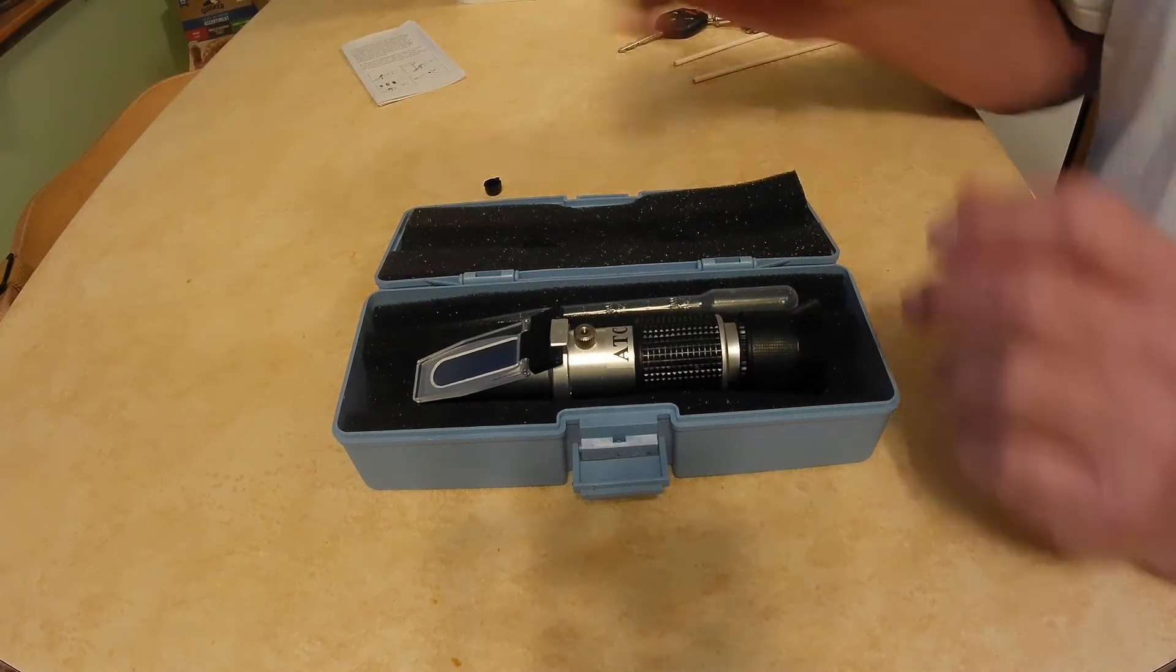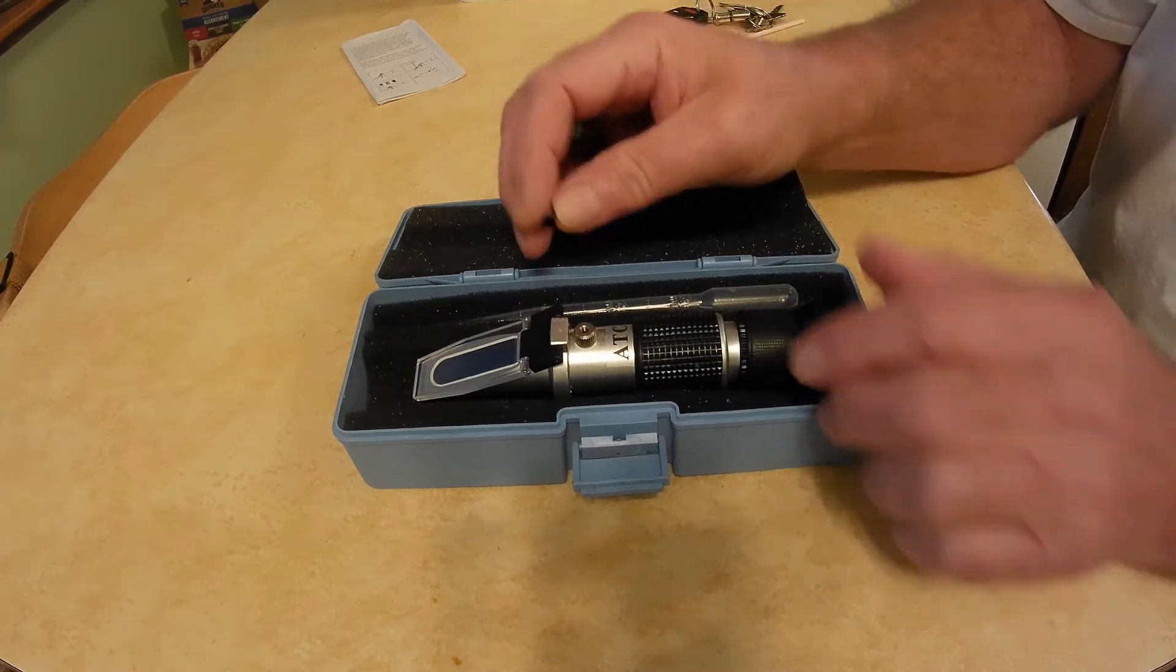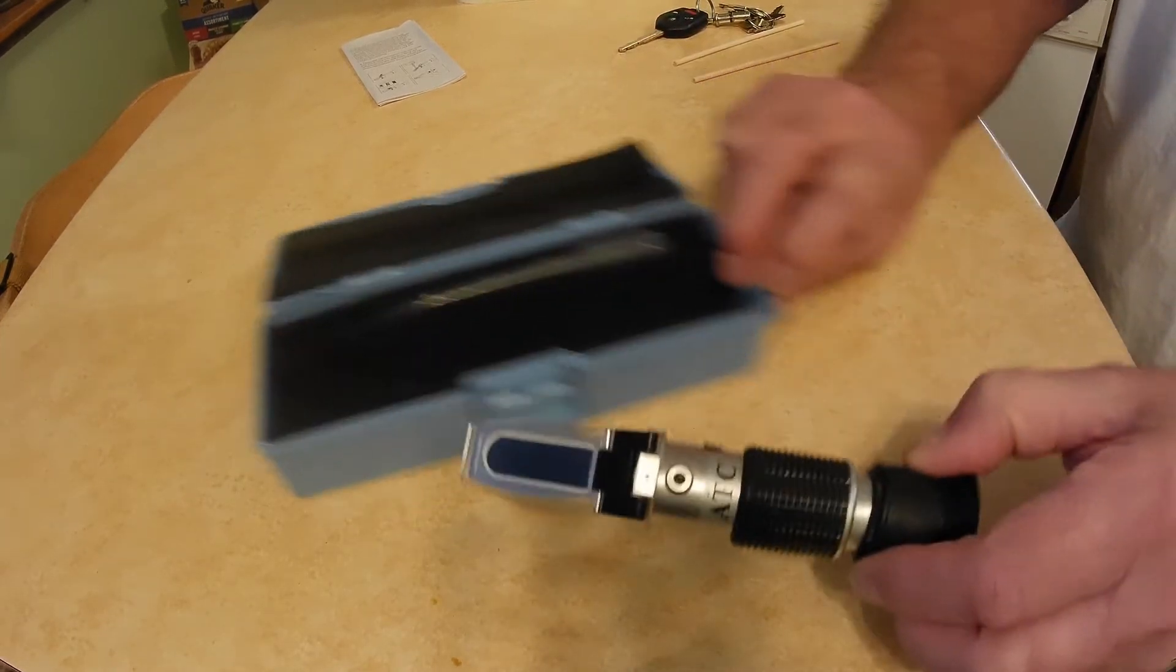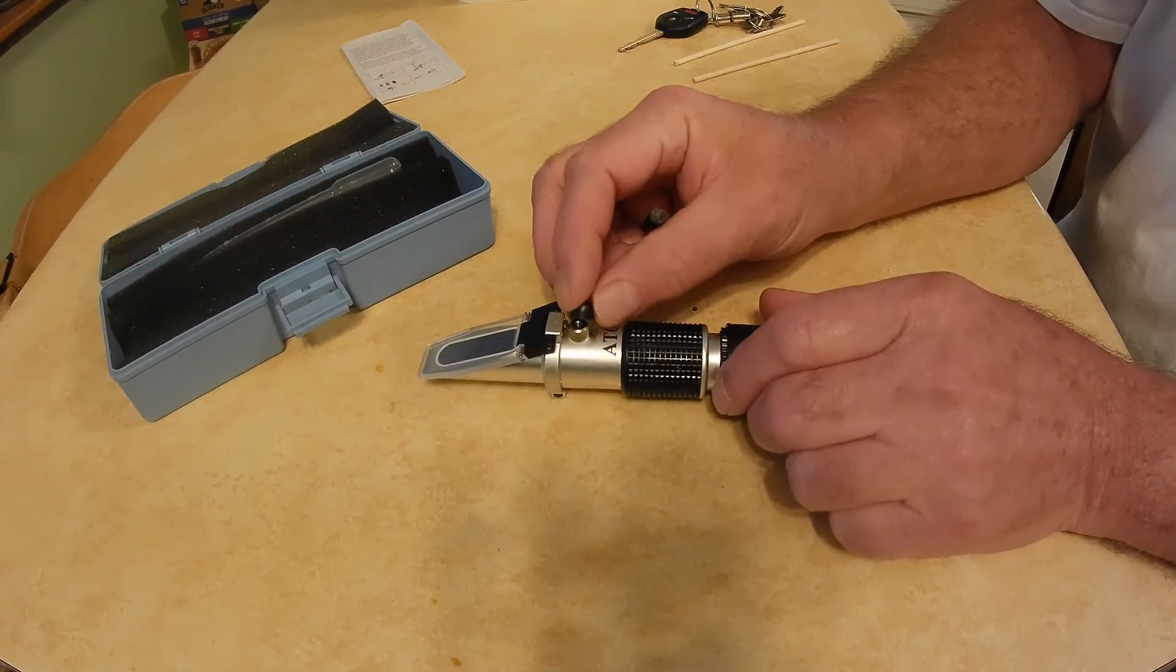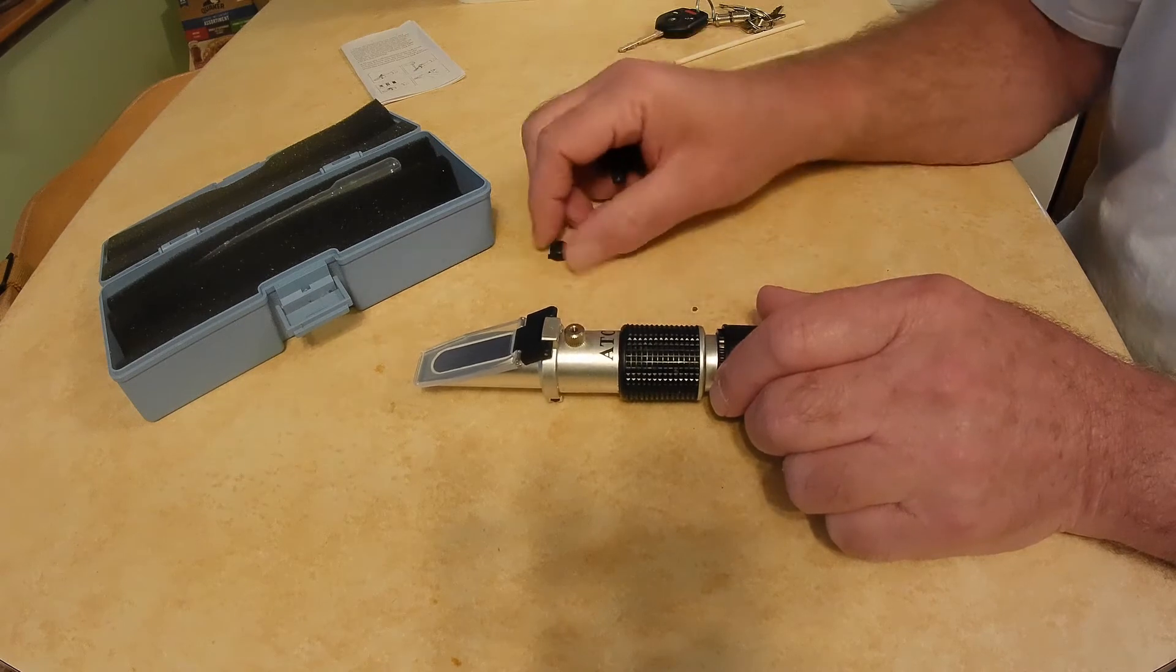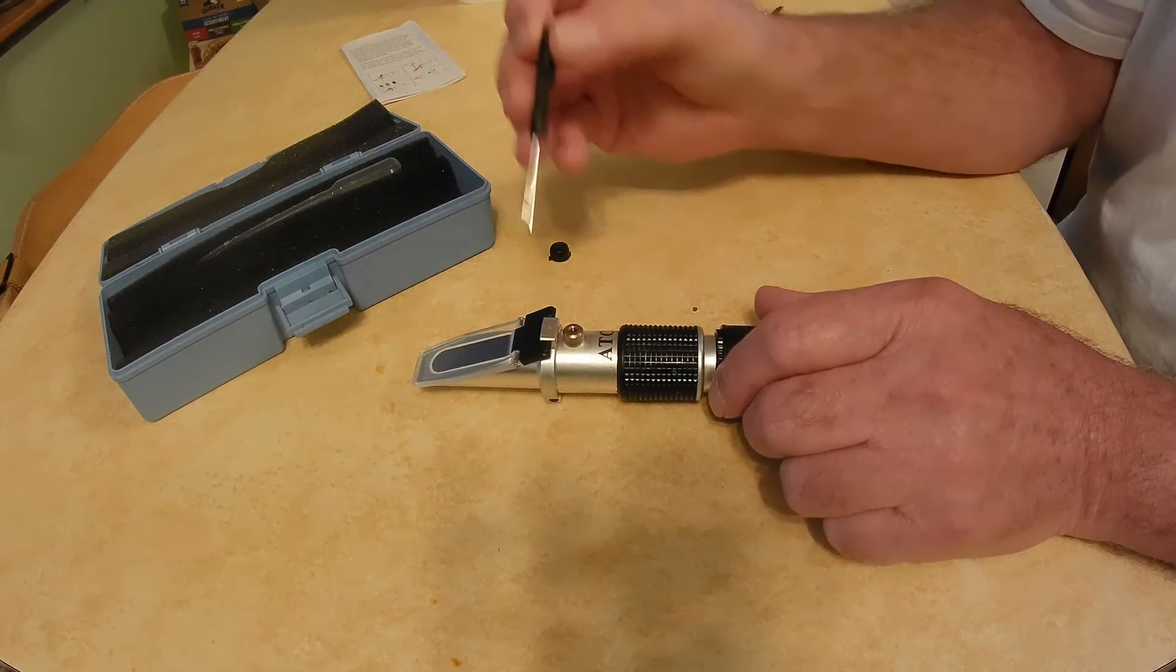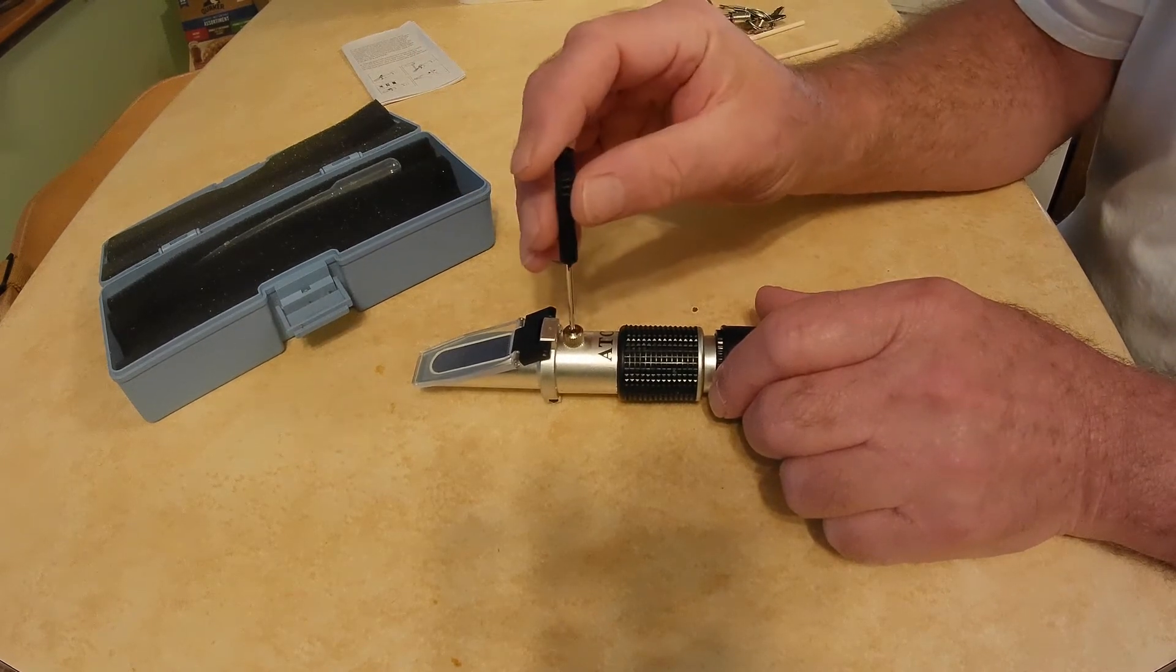And to calibrate them, there's this little rubber cover. Take it out of the box. There's this little rubber cover that goes over this device here, and then you get a little screwdriver with the kit and you put it down in there and turn the adjusting screw.